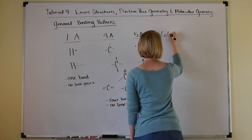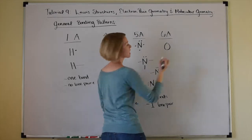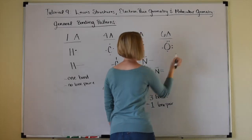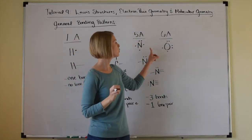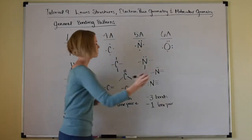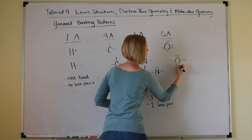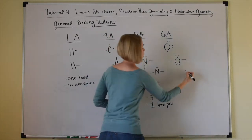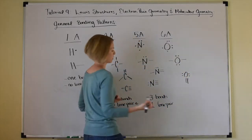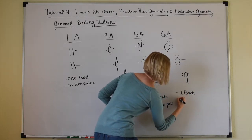Group 6A, such as oxygen, have six valence electrons. Typically they'll form two bonds and keep two lone pairs of electrons to themselves. That can happen with two single bonds and two lone pairs, or with a double bond and two lone pairs — two bonds and two lone pairs.